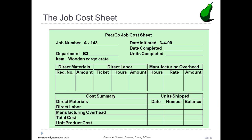The job cost sheet is used by the accounting department to track the direct and indirect costs associated with a given job. A job number uniquely identifies each job. Direct material, direct labor, and manufacturing overhead costs are accumulated for each job. The job cost sheet is a subsidiary ledger to the work in process account. We will look at a job cost sheet used by a hypothetical company called Pear Company, which constructs wooden cargo crates.